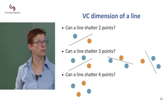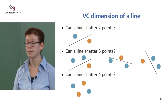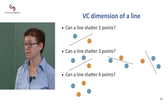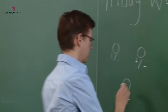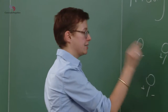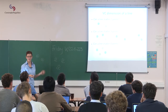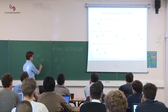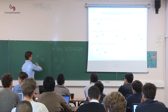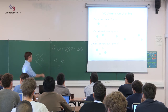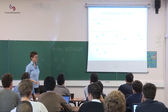What is the VC dimension of a line? Can a line shatter two points? Two points is relatively easy — there aren't so many ways to label them. Either they are both positive and there's nothing to shatter, or they are both negative. You can put a line anywhere. If one of them is positive and the other negative, you can put a line between them. And if the labels are reversed, the same line works. So a line can shatter two points.